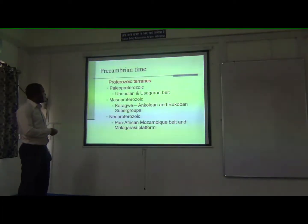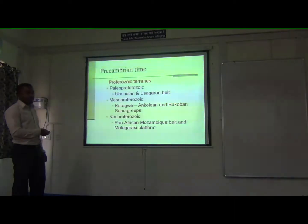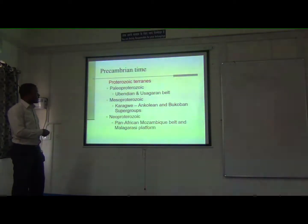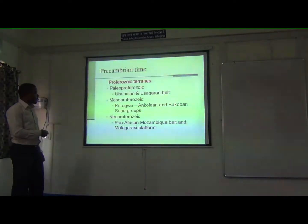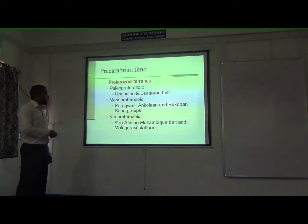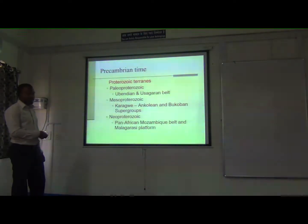In the Proterozoic time — from Paleoproterozoic to Neoproterozoic — in Paleoproterozoic time we have the mobile belts, which are the Ubendian and Usagaran belts. In Mesoproterozoic time, we have the Karagwe-Ankolean and the Bukoban supergroups. And in Neoproterozoic time, we have the Pan-African, or in Tanzania we call it the Mozambique belt, as well as the Selous platform.